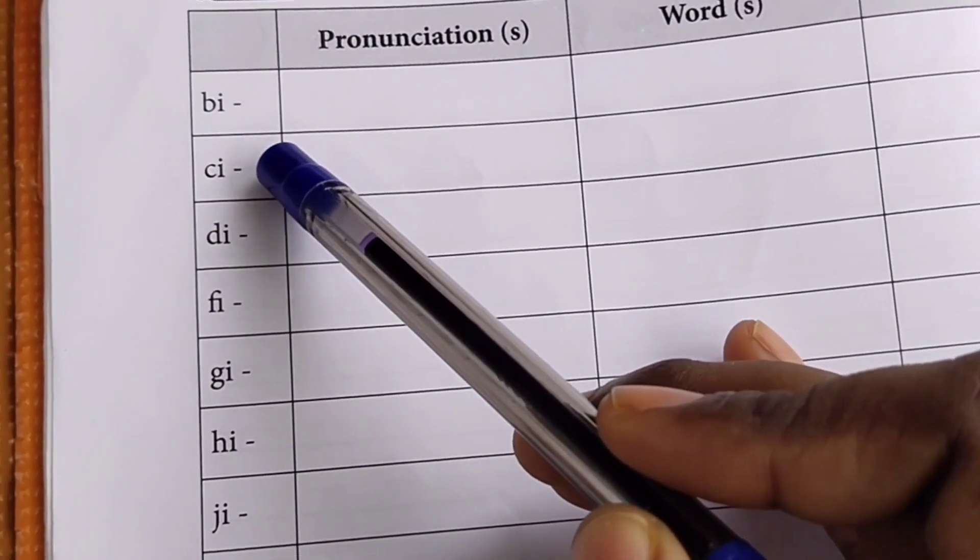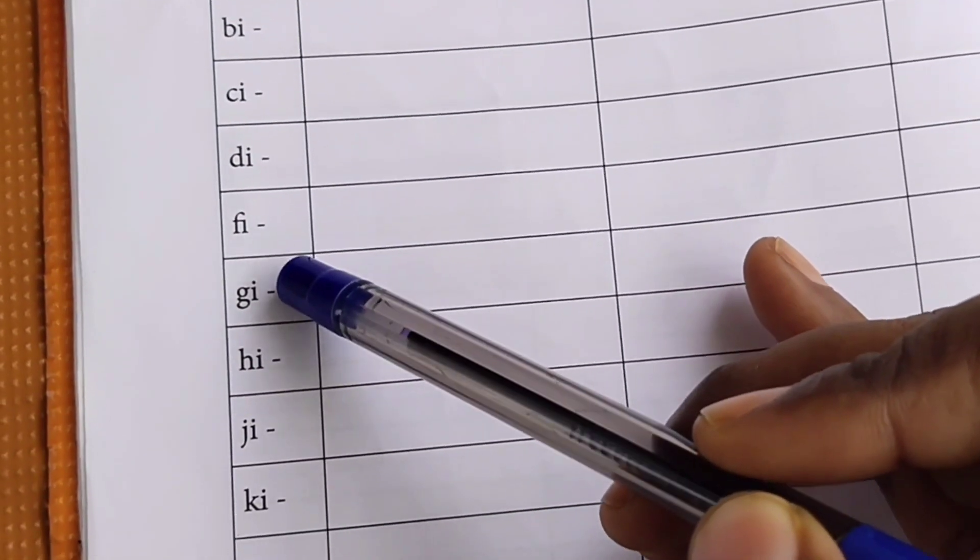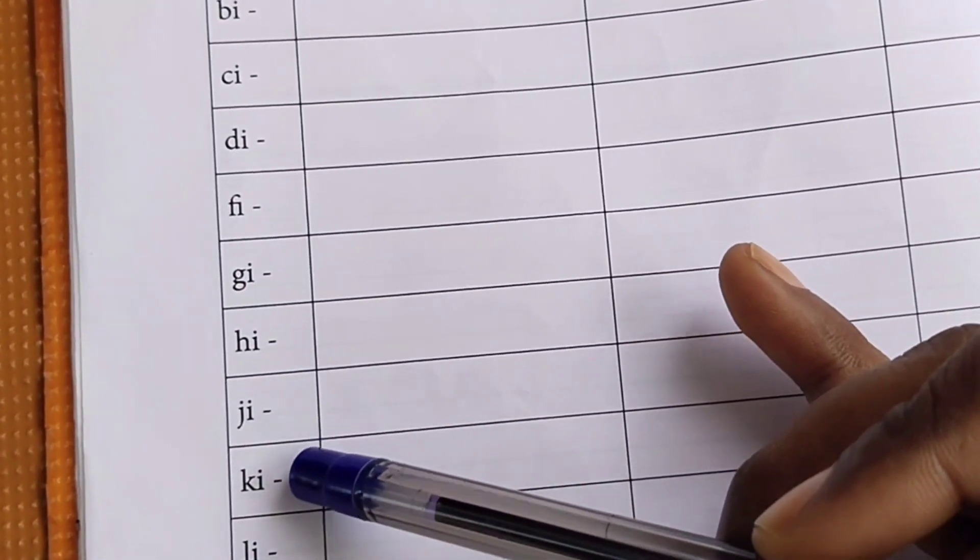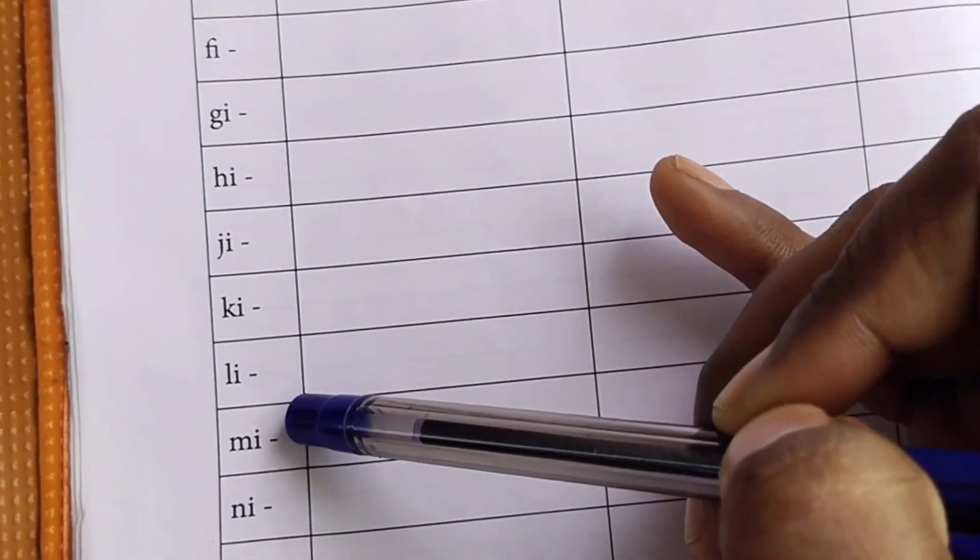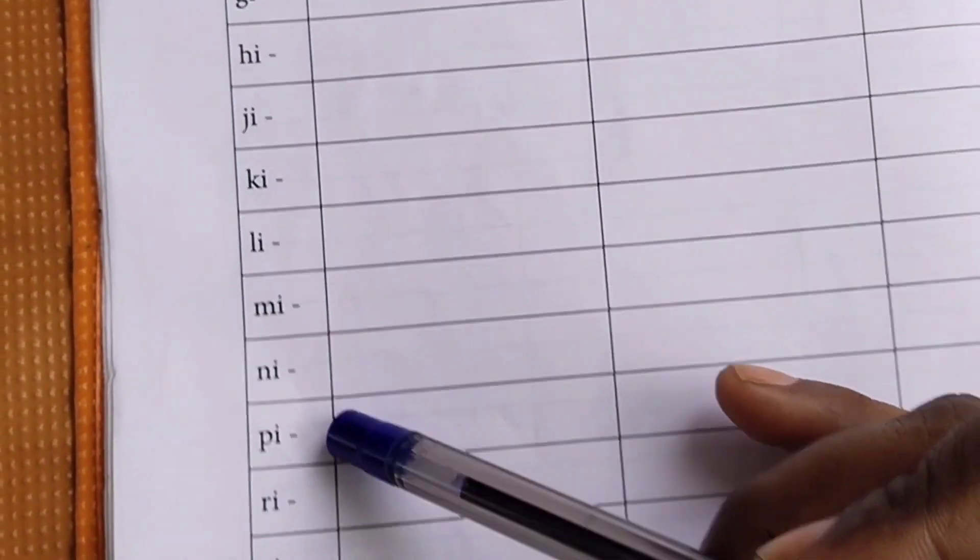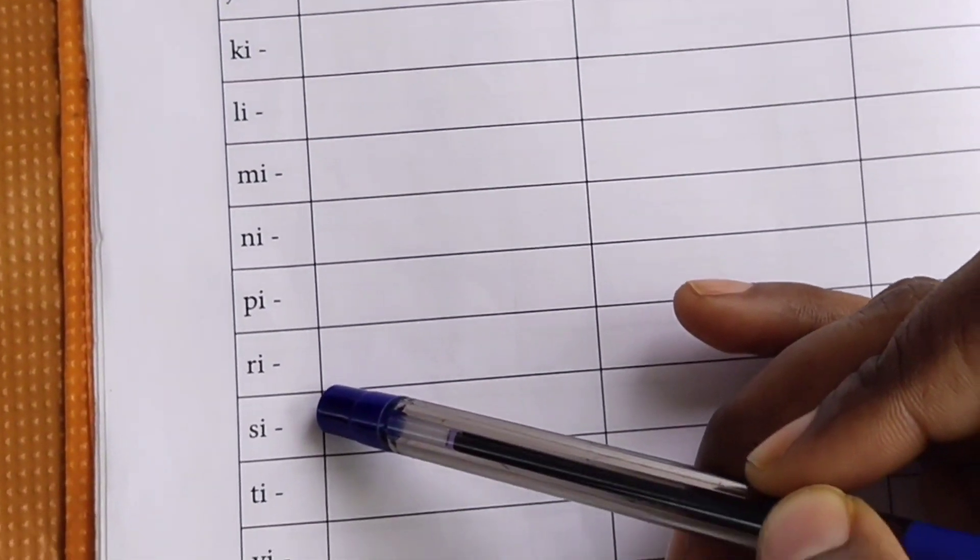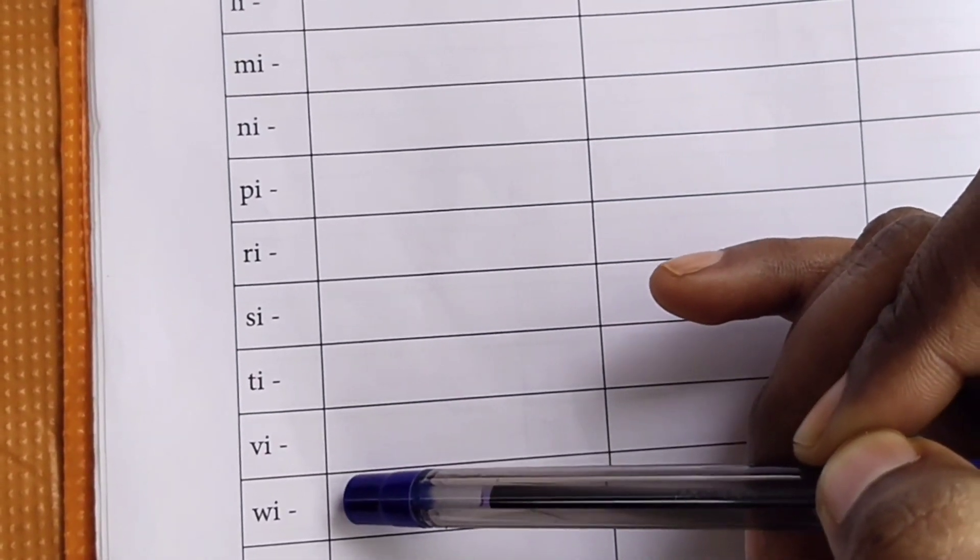BI, CI, DI, FI, GI, HI, JI, KI, LI, MI, NI, PI, RI, SI, TI, VI, WI, ZI.